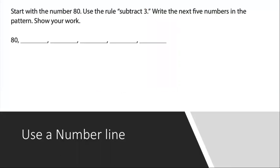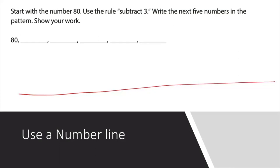Another way that you can find a pattern is by using a number line. A number line is fairly simple — you just draw your line. At the beginning, you start with the number you want to use. In this case, they want us to subtract three. So because you're going backwards, a good practice would be to start your 80 here and move backwards. I will subtract three: one, two, three.